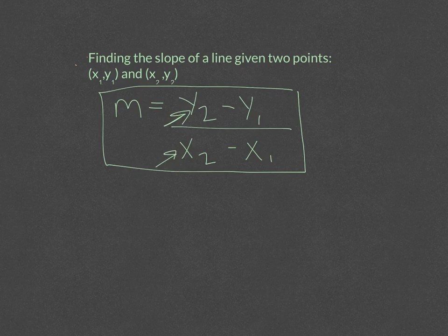Alright, let's try one problem where we find the slope. So let's find the slope between the points, 2 comma 7, and the points, negative 1 comma 3.